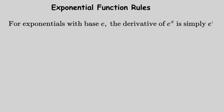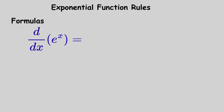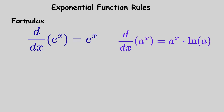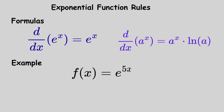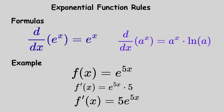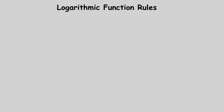Exponential function rules: for exponentials with base e, the derivative of e raised to the power of x is simply e raised to the power of x itself. The formulas are: d by dx of e raised to the power of x equals e raised to the power of x, and d by dx of a raised to the power of x equals a raised to the power of x multiplied by the natural log of a. For example, if f of x equals e raised to the power of 5x, the derivative is e raised to the power of 5x multiplied by 5, which equals 5e raised to the power of 5x.